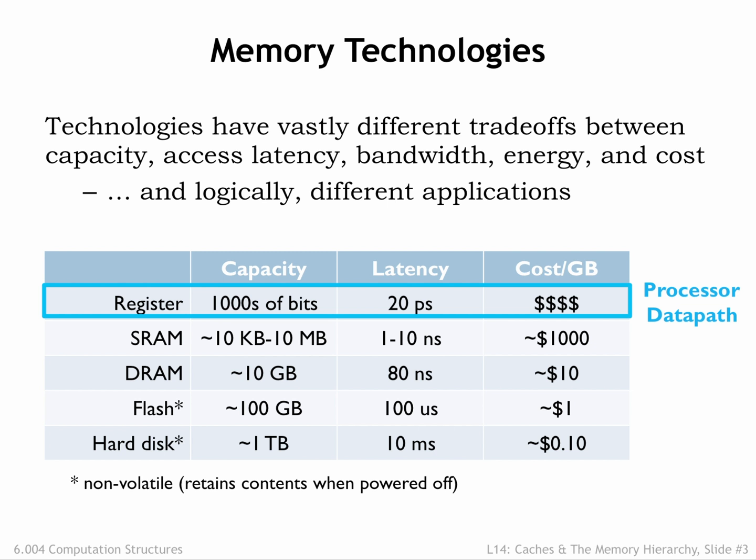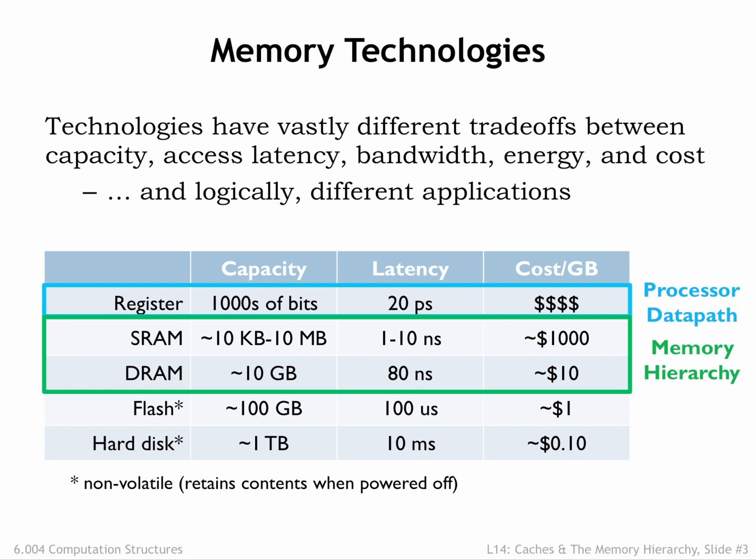Our registers are built from sequential logic and provide very low-latency access to at most a few thousands of bits of data. Static and dynamic memories, which we'll discuss further in the coming slides, offer large capacities at the cost of longer access latencies. Static random access memories, SRAMs, are designed to provide low latencies to many thousands of locations. Already we see that more locations means longer access latencies.